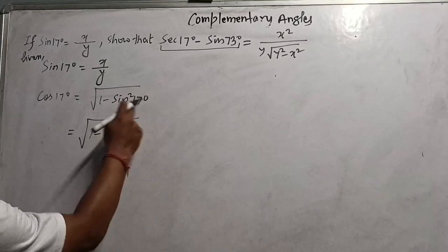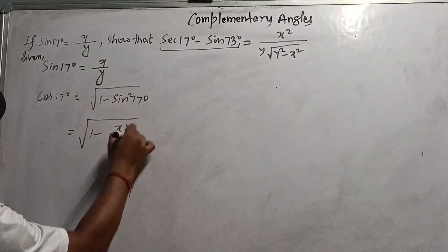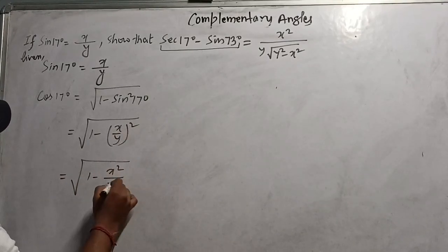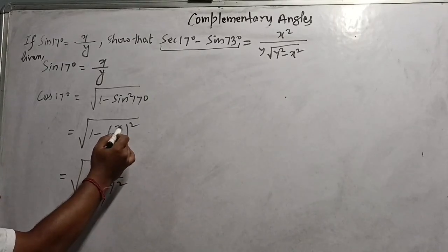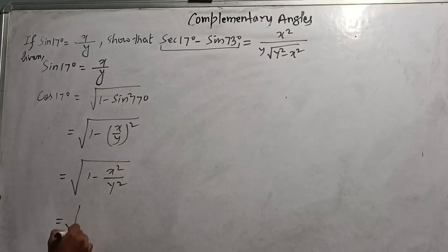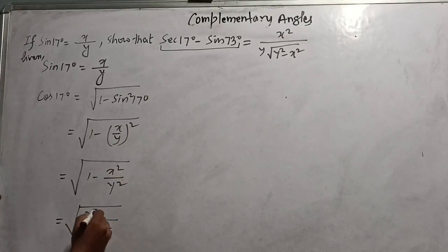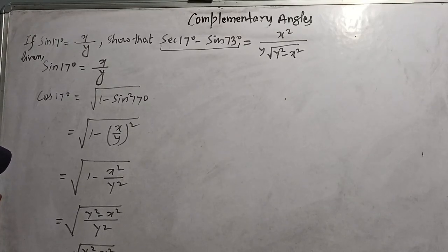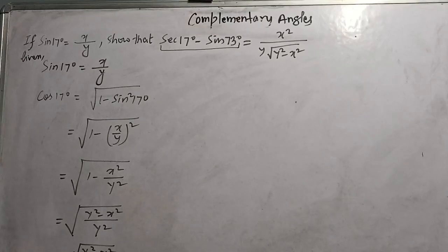Taking LCM: cos17° = √((y² - x²)/y²). Separating the root and cancelling, we get cos17° = √(y² - x²) / y. So whenever sin is given, always find cos first — that is your first step.